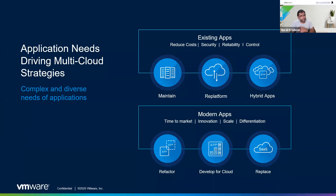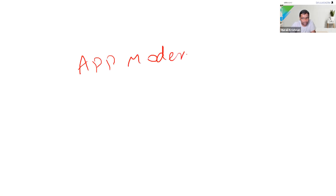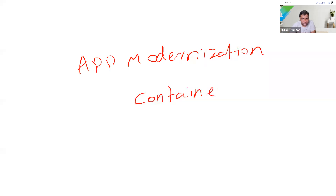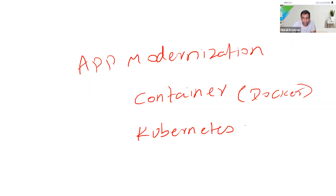Last time, to host an application you needed an operating system, middleware, then run the application. But now with app modernization, we containerize the application. We use Kubernetes to manage the app. For containers, you have a Docker engine to run them. For Kubernetes, there are many solutions — one of which is VMware Tanzu. Your infrastructure is expanding and running everywhere, and your application is also modernizing.